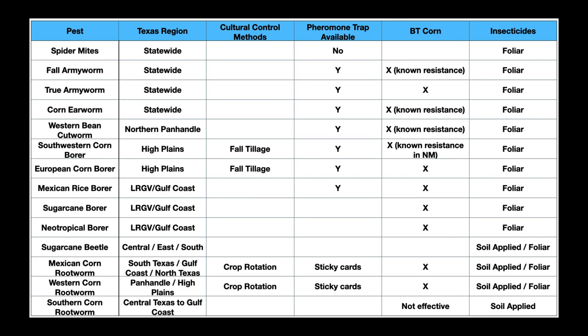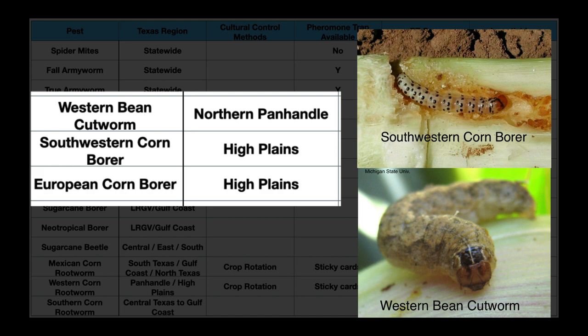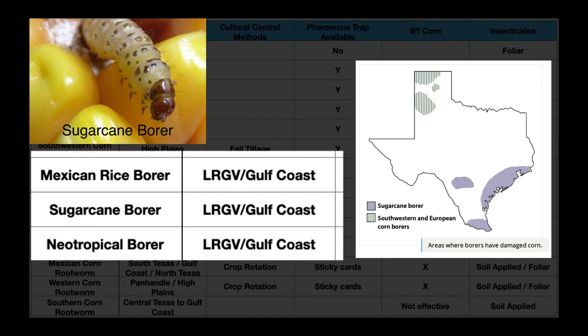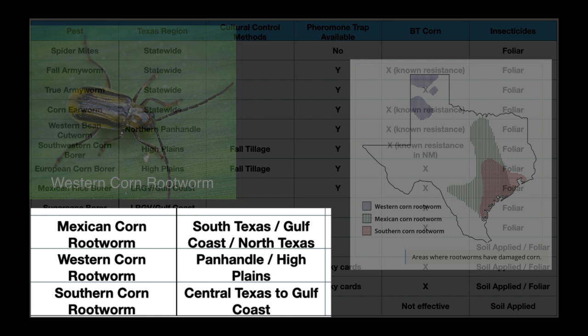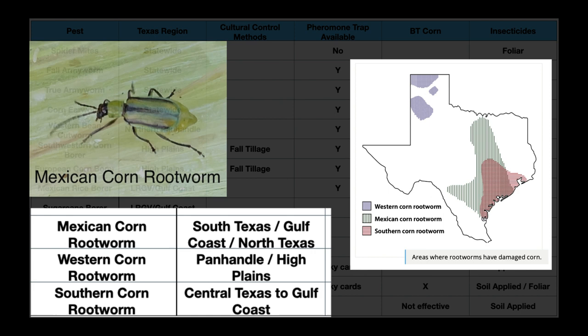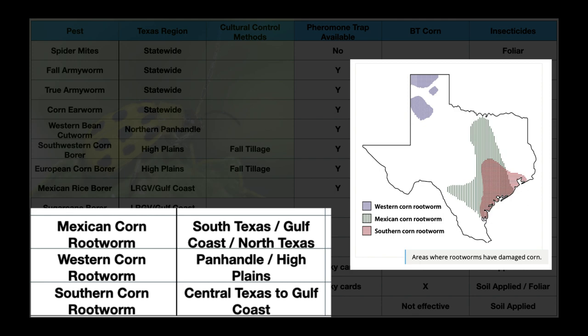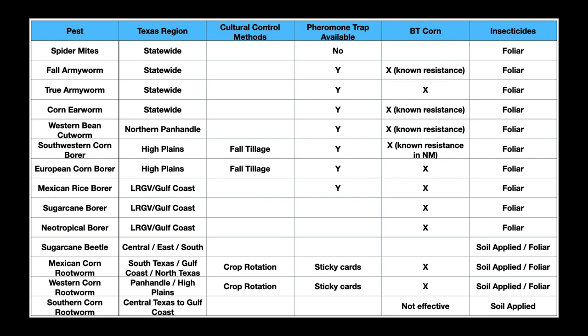The panhandle has to deal with southwestern and European corn borer and western bean cutworm, while the rest of the state does not. Sugarcane borer, Mexican rice borer, and neotropical borer are pests in the lower Rio Grande Valley and on the Gulf Coast. Sugarcane beetle is not a pest in west Texas and on the high plains. For rootworms, western corn rootworm is a major pest on the high plains, but Mexican corn rootworm does not occur in high enough numbers to be a pest. However, it can be a major pest in south and central Texas, as can the southern corn rootworm. Only a few of these pests have good cultural control options available, but populations of most can be monitored with pheromone traps.